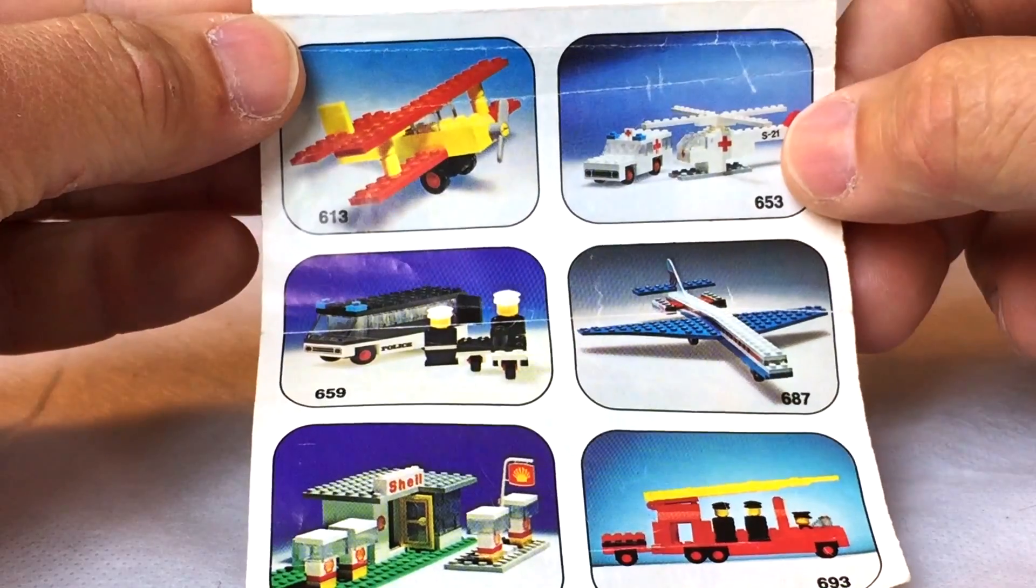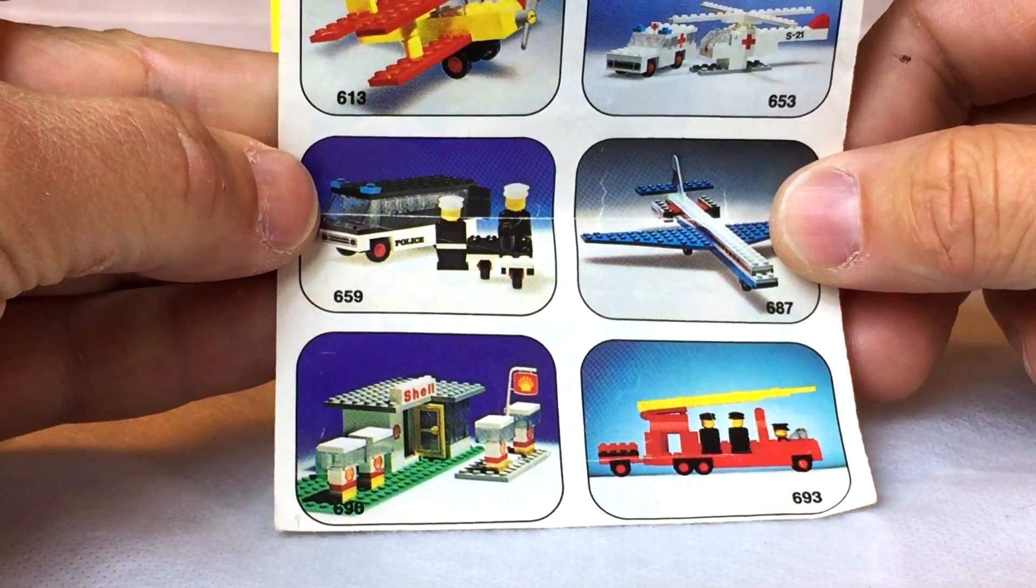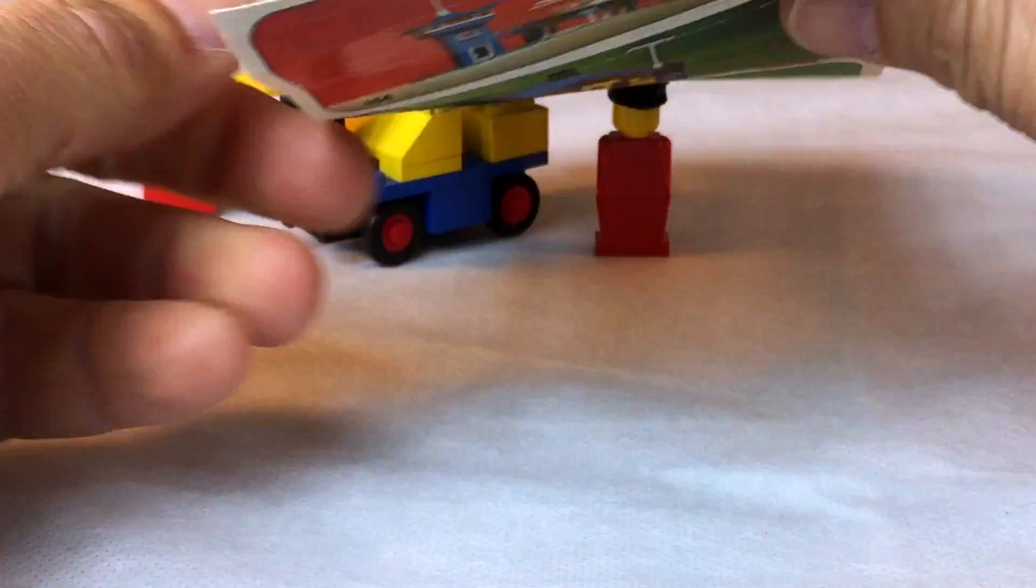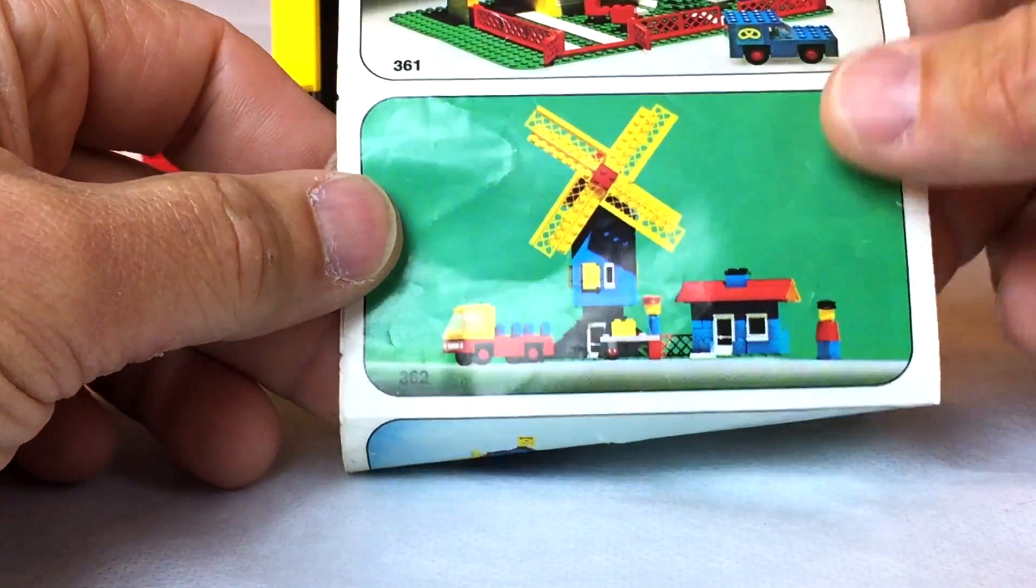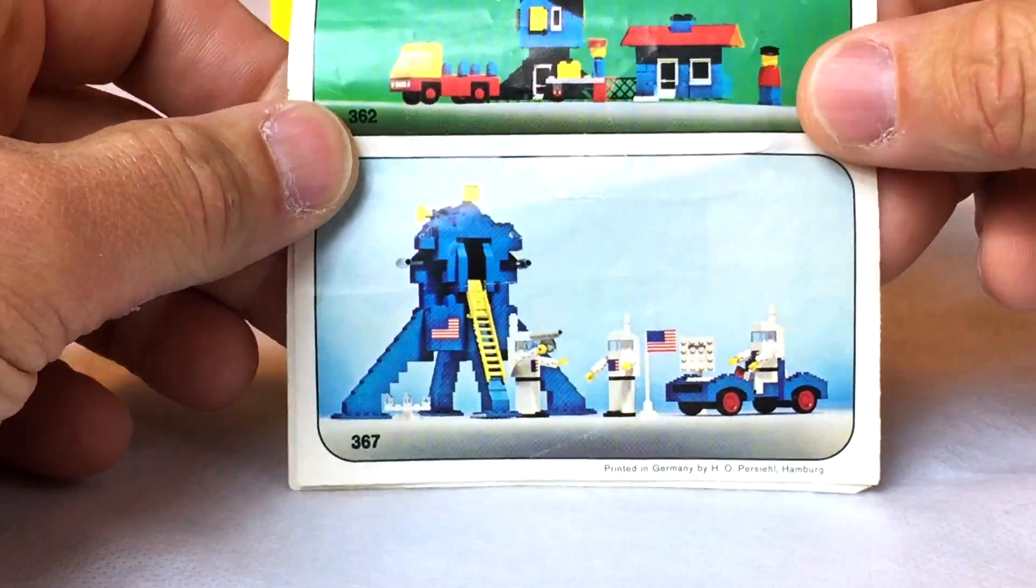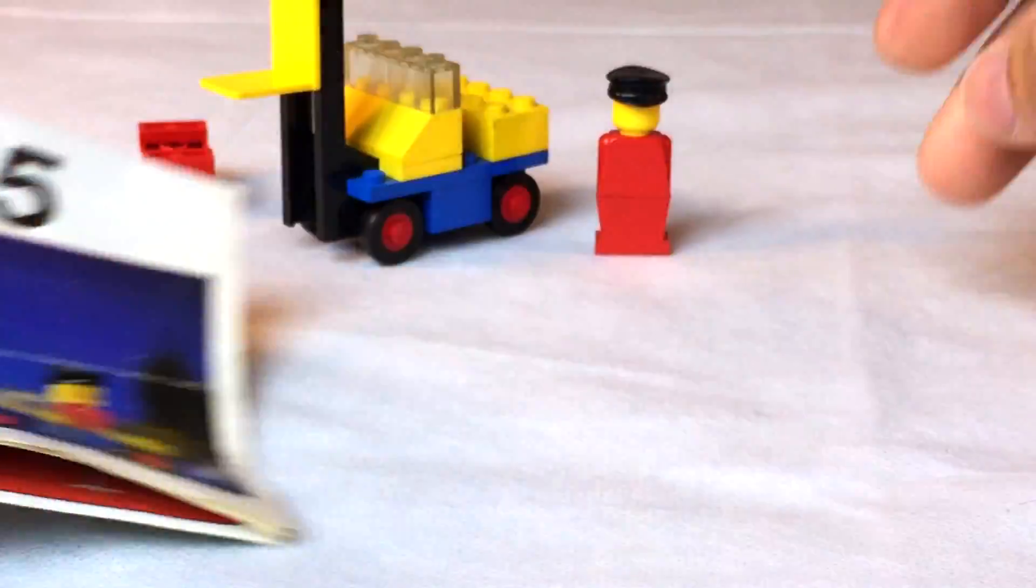We got the biplane, the ambulance and helicopter, an airplane, the police units, a Shell station, the fire truck, heliport. I think that's a tea garden, windmill, and the space landing set. It's pretty awesome. It's set 615, forklift with the rare red 2x4 brick.